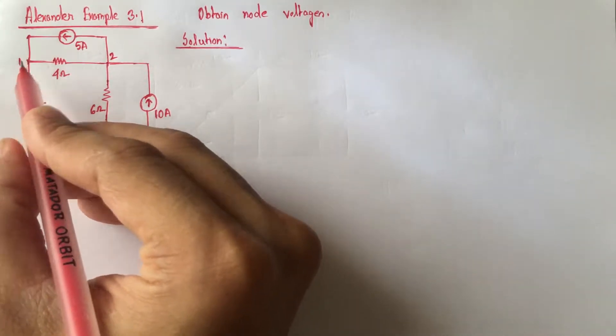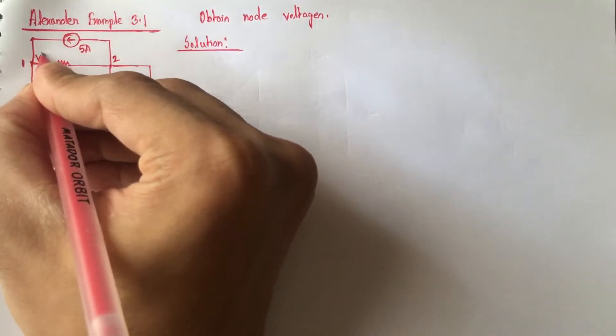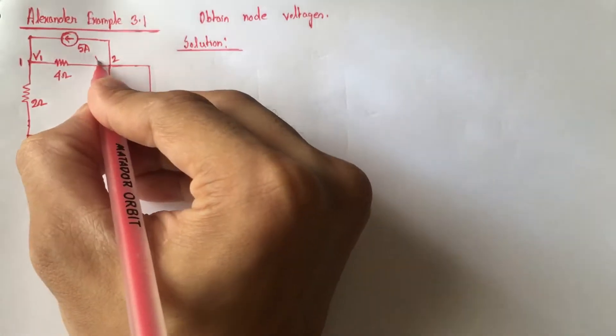Let the node voltage for node 1 be V1 and node voltage for node 2 be V2.